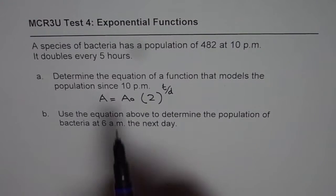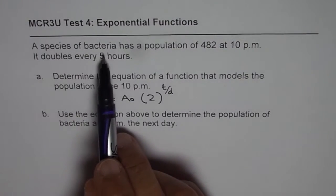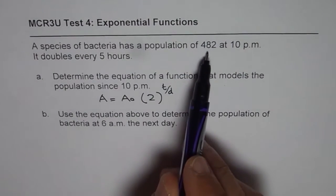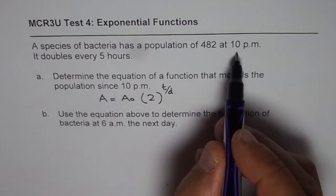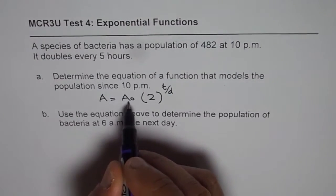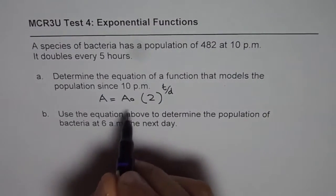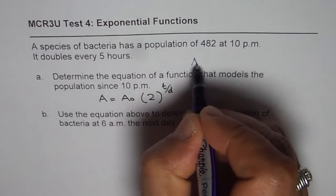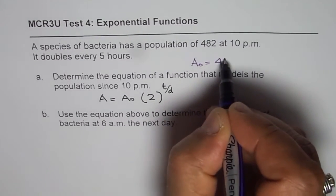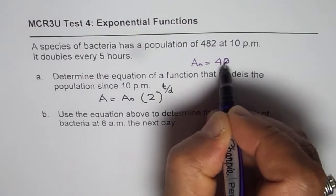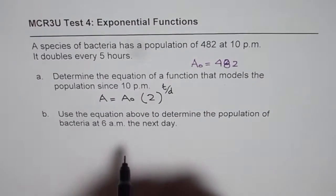Now, let us read the question once again. A species of bacteria has a population of 482 at 10pm, so A0 is 482 for us, initial population. So we have initial population to start with is 482. This is at 10pm.